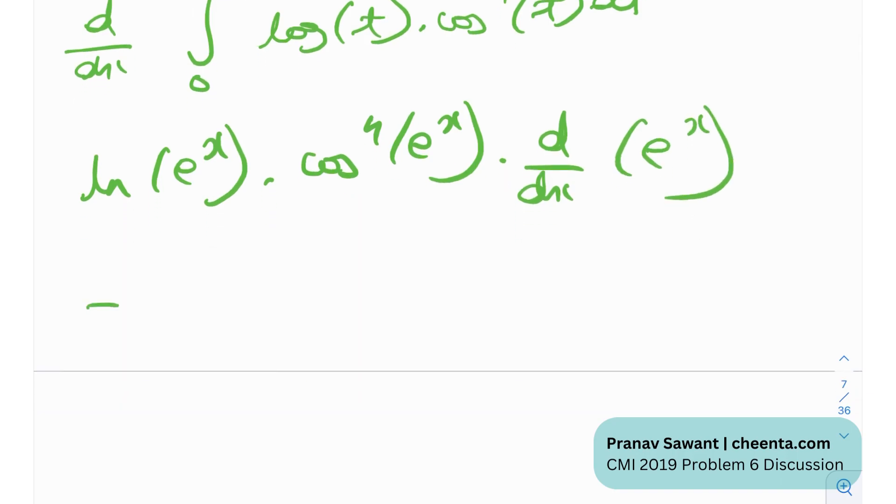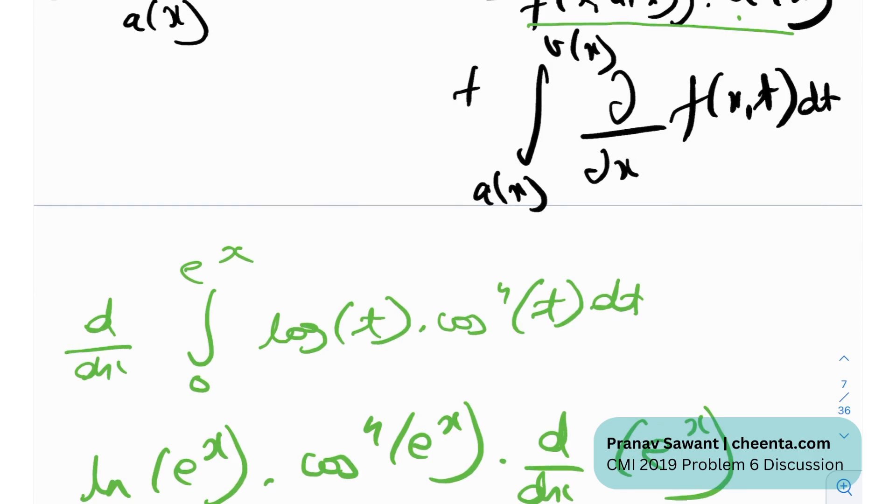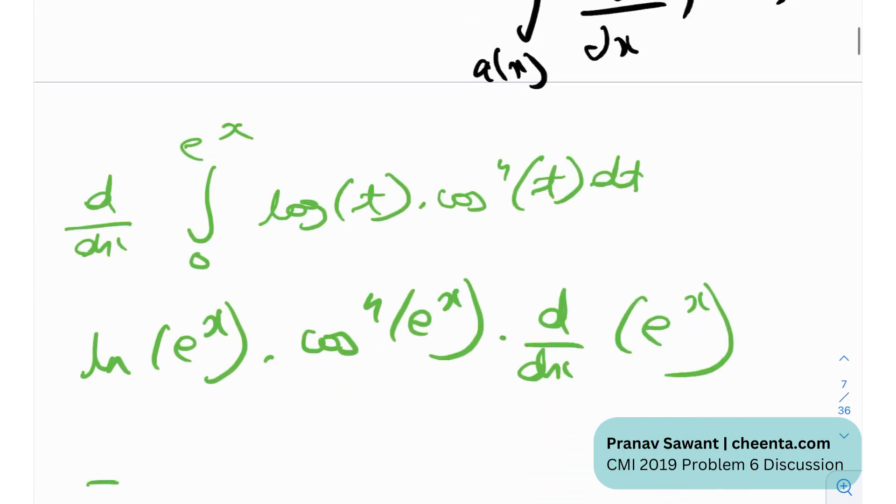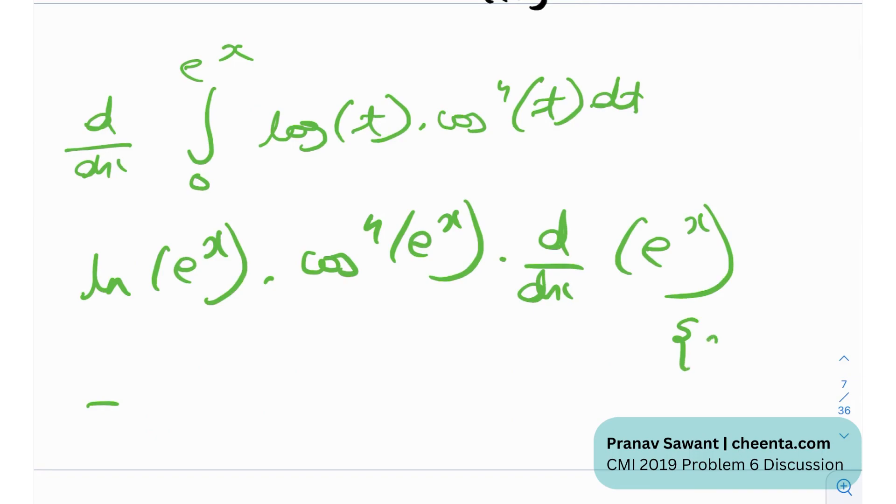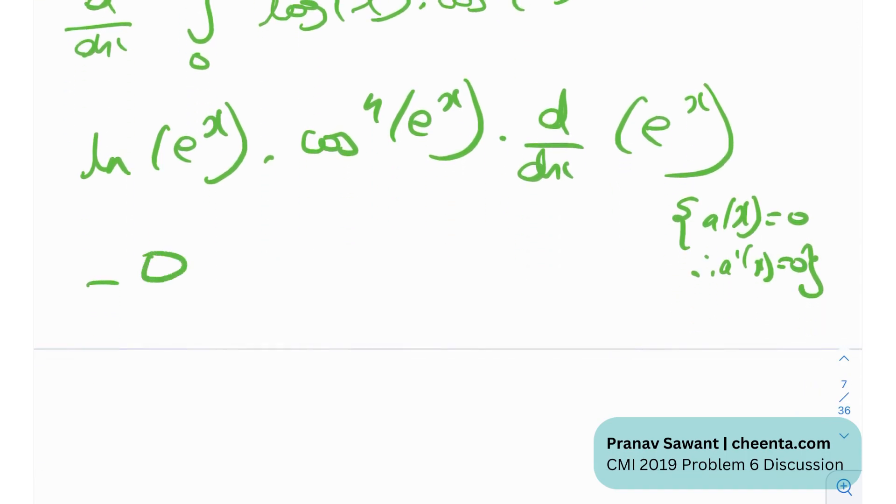Then, we'll subtract it from essentially what I had written over here, this term. So this is the term that I just wrote. Now, this is the term what I will write, but if you see a prime x, a of x is the lower limit, and a of x is a constant over here, so a prime x will be 0. I'll just write a note over here. a of x is equal to 0, therefore, a prime x is equal to 0. So the second term will essentially be 0.